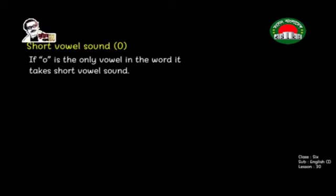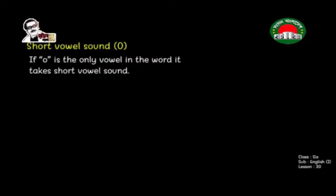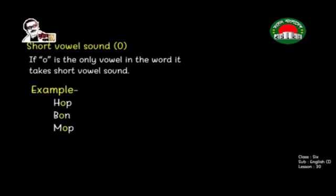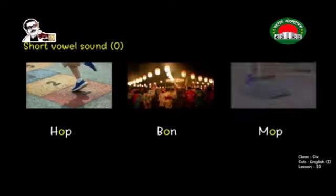Now short vowel sound O: if O is the only vowel in the word, it takes a short vowel sound. For example, if E leaves the word 'hope', it becomes another word where O is the only vowel. In this case, O takes the short sound, which sounds like 'o'. Examples: hop, bun, mop — this is called a short vowel sound.